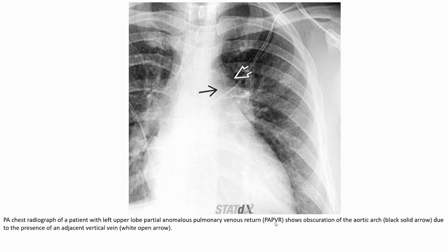In left upper lobe PAPVR draining to right atrium, there is obliteration of the aortic arch due to the presence of an adjacent vertical vein.